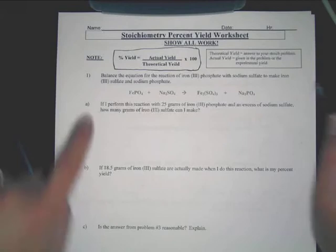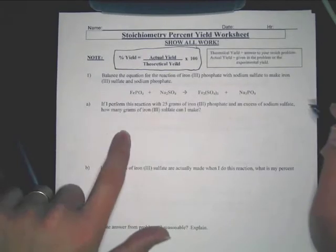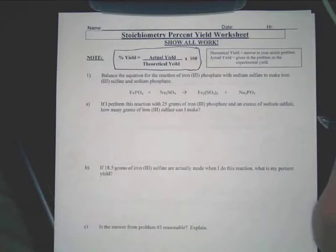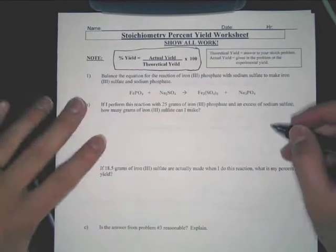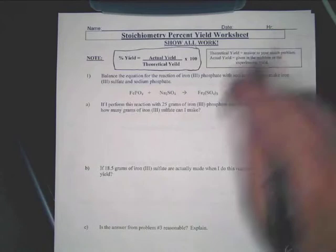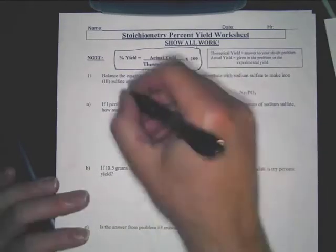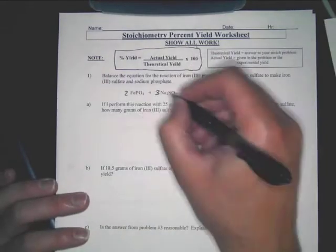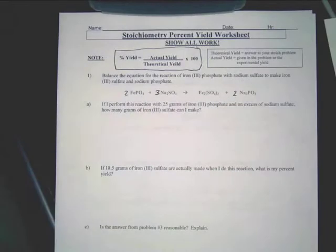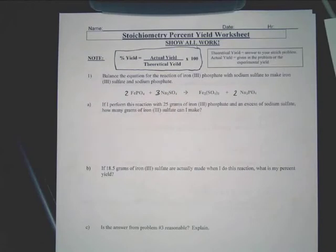So what I want you to do first, I want you to try to do A by itself. This is a mass-to-mass problem. Part A here is a very basic mass-to-mass problem. Now, in terms of balancing, just really fast, the equation should have these coefficients. So add those in.